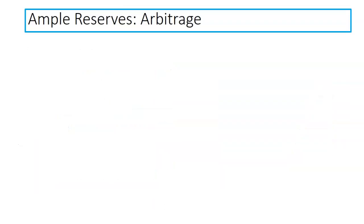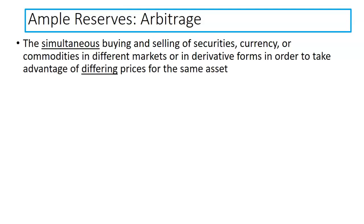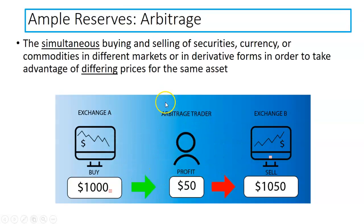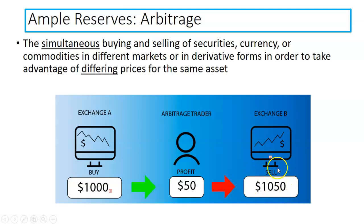This whole concept revolves around the idea of arbitrage. It's not a new thing to the banking sector, but it's a very important concept within the current ample reserve banking system. Arbitrage is the simultaneous buying and selling of securities, currency, or commodities in different markets or in derivative forms, in order to take advantage of differing prices for the same asset. An arbitrage trader has information and uses it to their profit. They find exchange A is selling a good for $1,000, and they know in exchange B the same good sells for $1,050 — so they buy in exchange A, sell in exchange B, and keep their profit. Nothing crazy, nothing new.